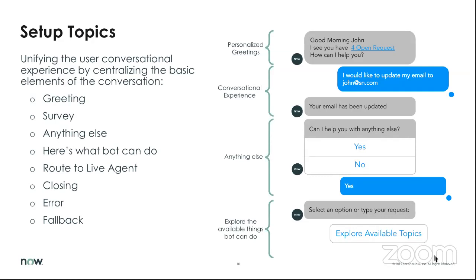Organizations often want a more personal greeting unique to their company — instead of 'Hi, how can I help you?' maybe it's 'Good morning' or 'Hello, how's your day?' This can introduce a component of empathy as part of that personal greeting. Other setup topic areas include 'anything else' topics — 'Is there anything else I can help you with?' — and other available topics for when users aren't finding what they're looking for.